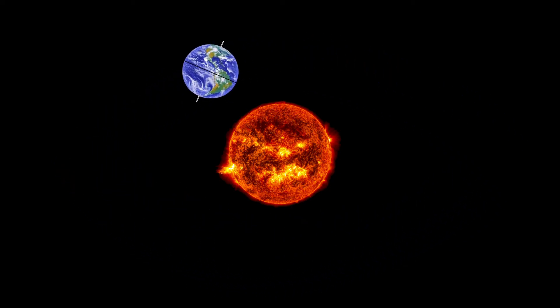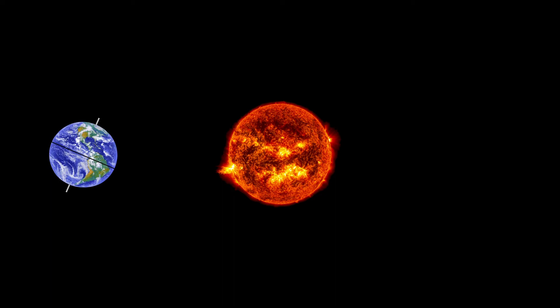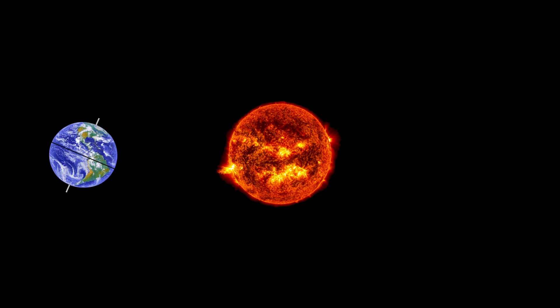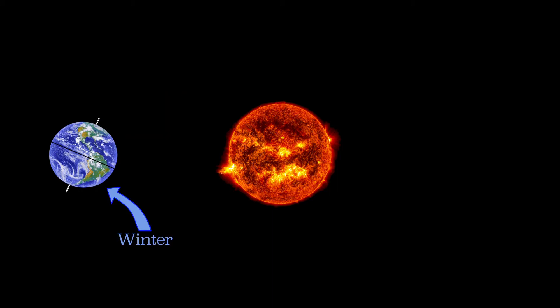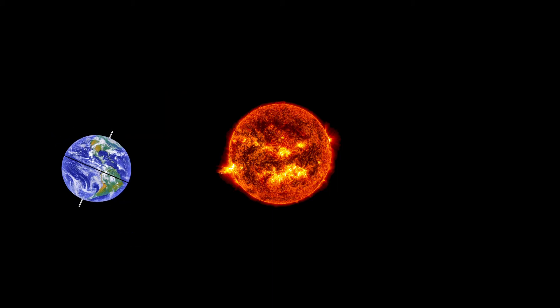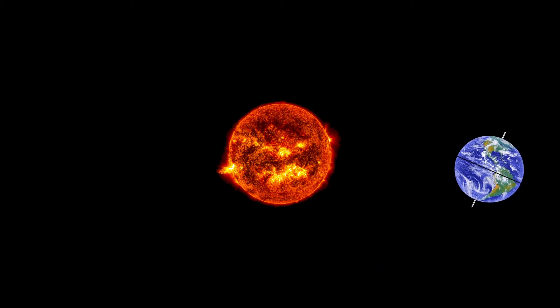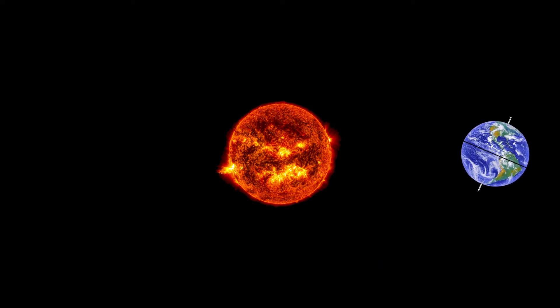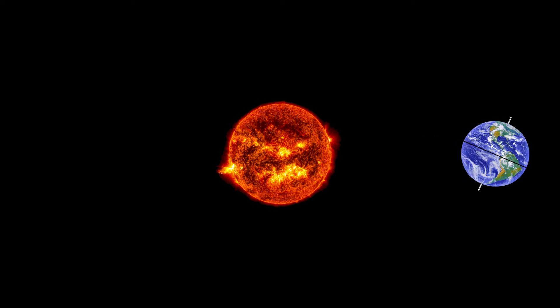When the Earth is in this position, it is tilted toward the Sun and the northern hemisphere is getting more direct sunlight — up here it's summer and down here it's winter. Six months later the Earth will be here, tilted away from the Sun, and the southern hemisphere is getting more direct sunlight — down here it's summer and up here it's winter.